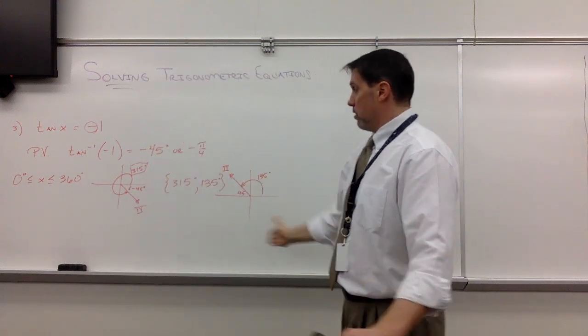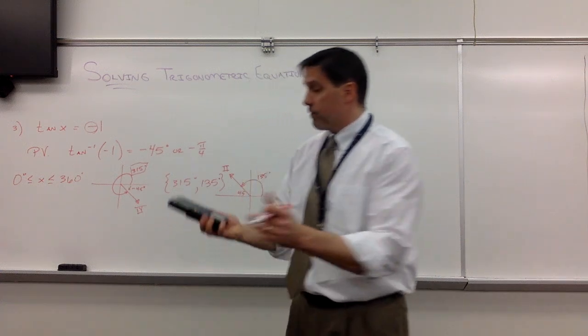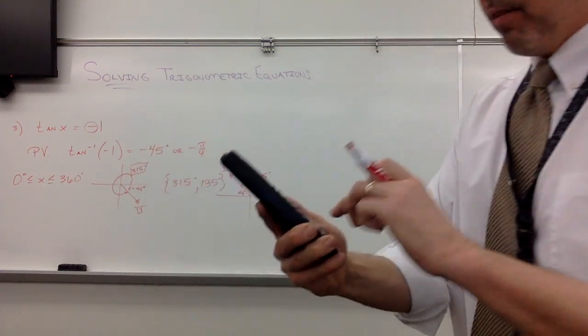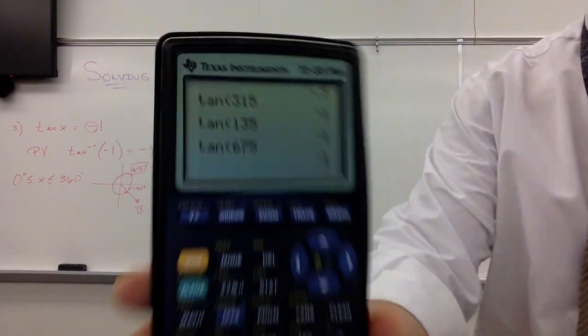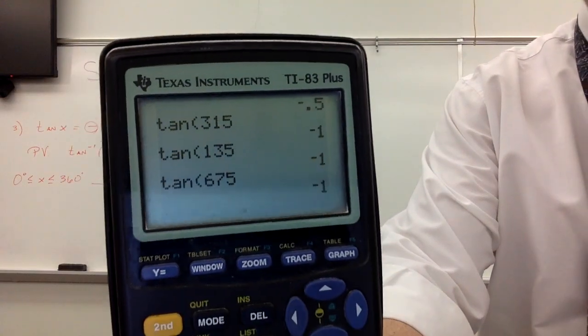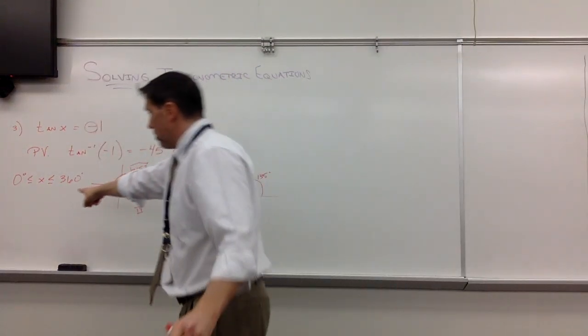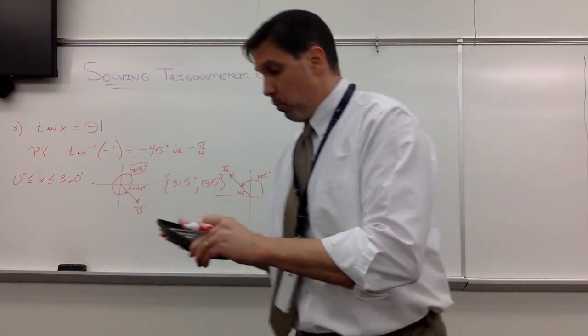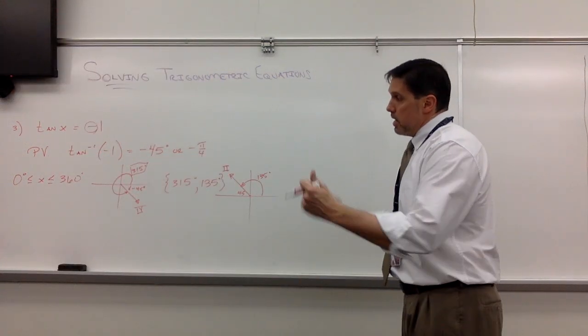We can keep going with coterminal angles, if you remember that. Add 360 to 315, and you know, 360, what is that, 675. If I did the tangent of 675, if I did the math right, yeah. But 675 is out of bounds. We said 0 to 360 right here. So these are the only two solutions between 0 and 360 that work for this tangent of x equals negative 1.